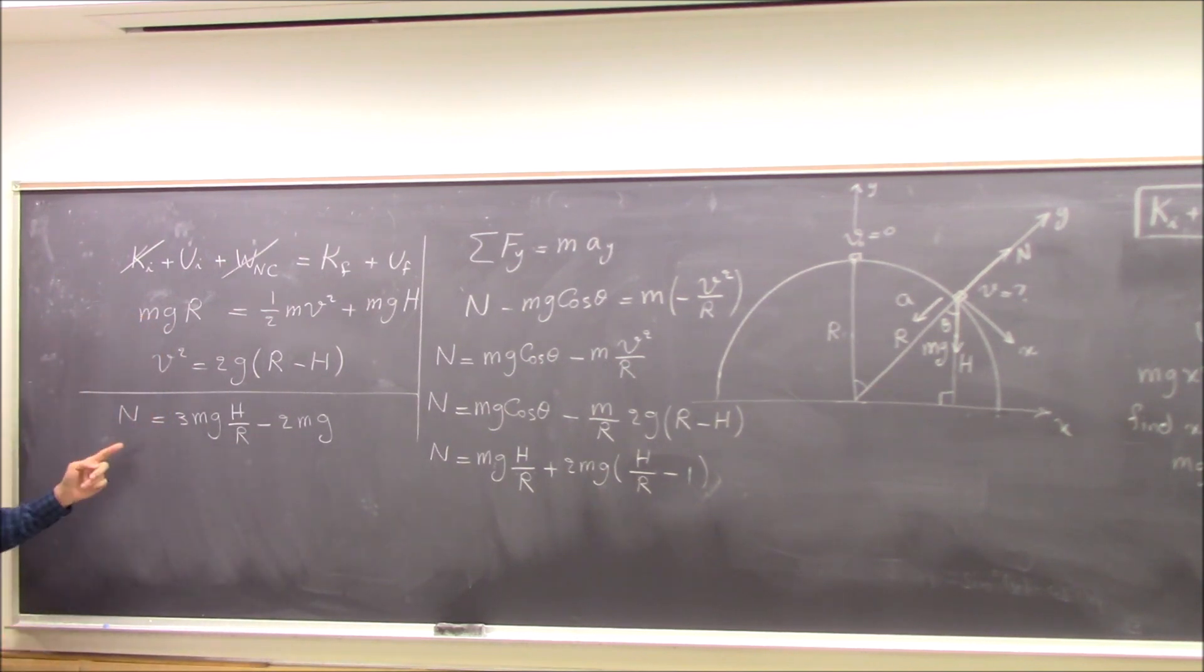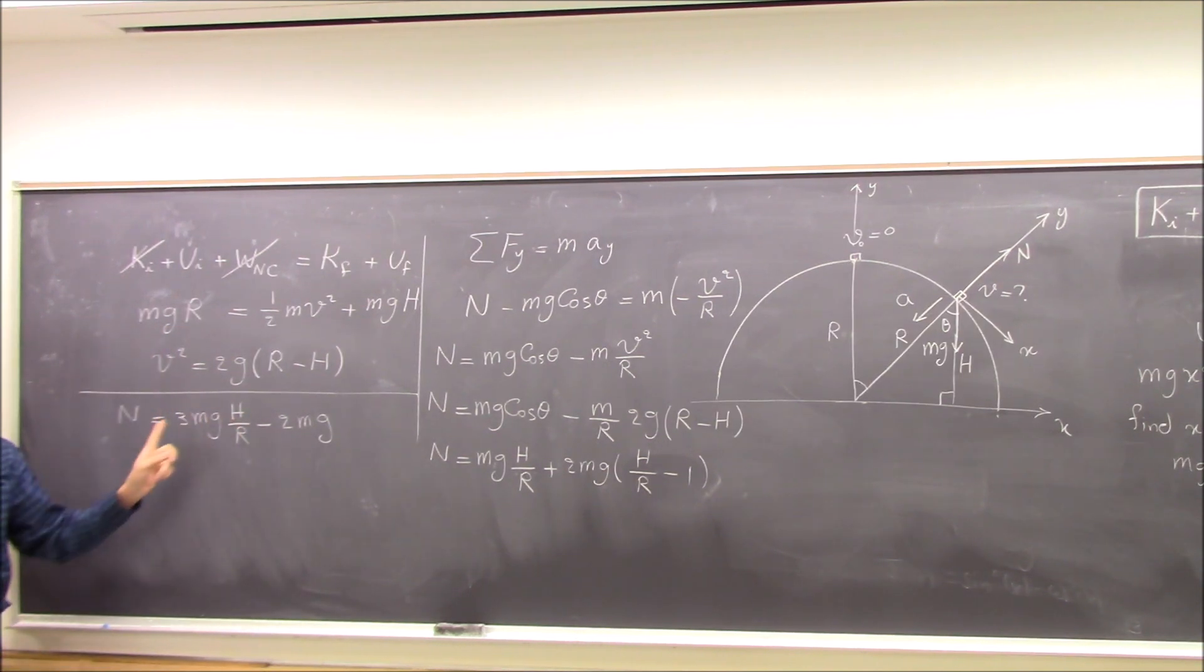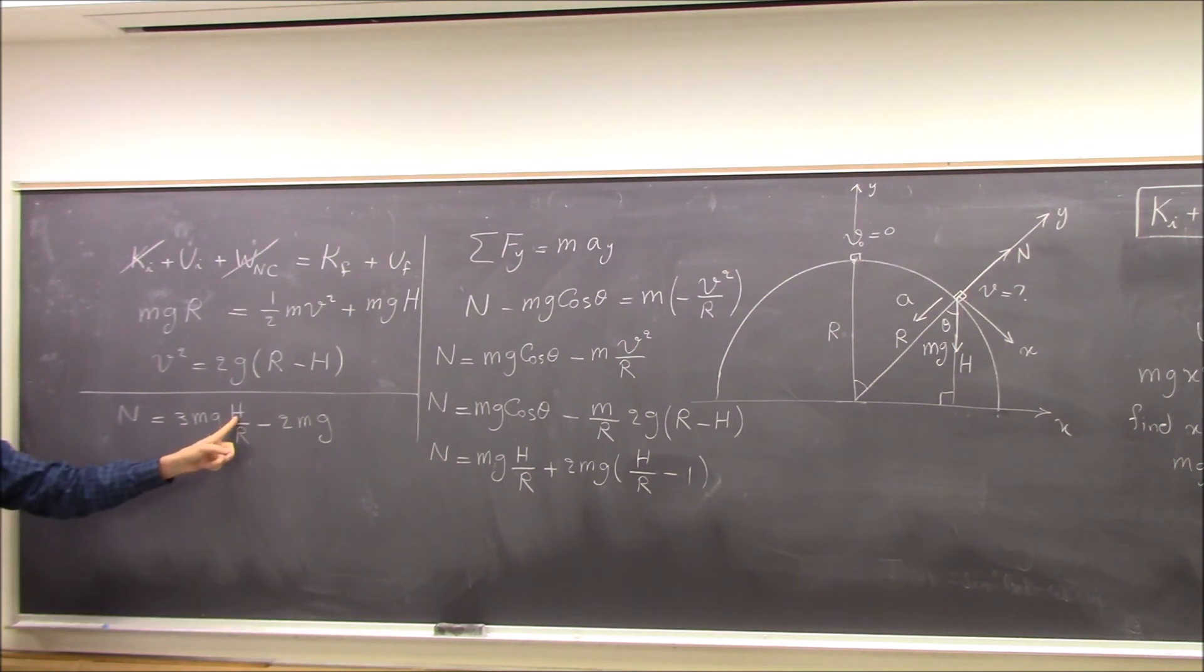So I get this equation for N in terms of H and R and other constants. And now I want to see at what height it starts losing contact. So when H decreases, this N decreases. And the minimum value for H is when N is equal to zero.